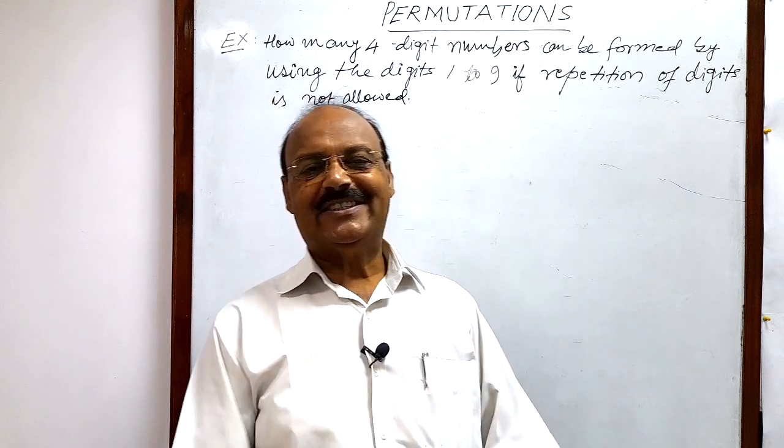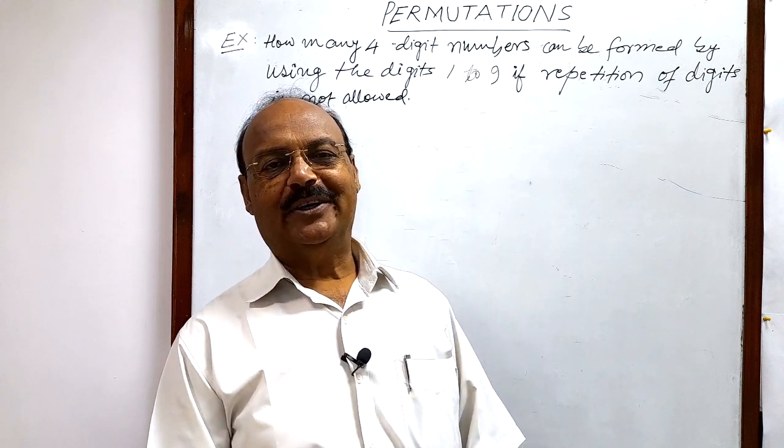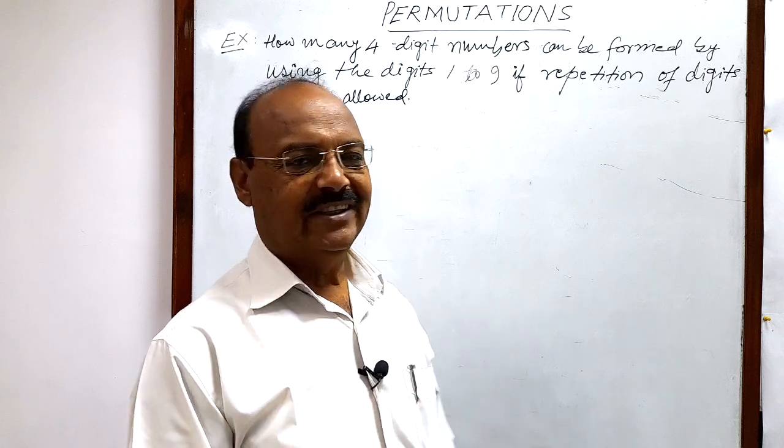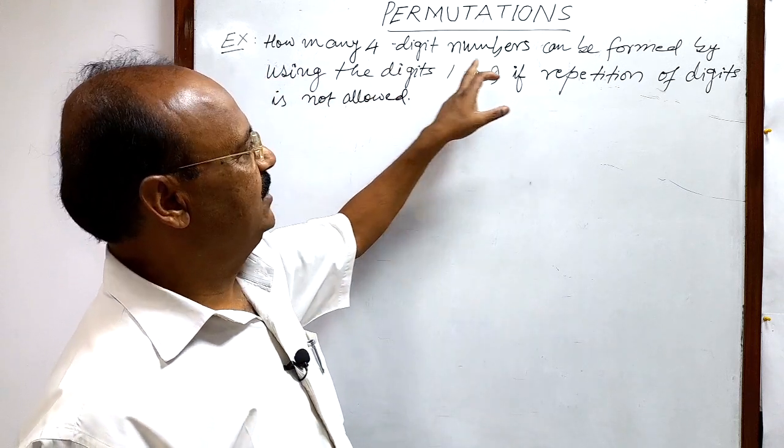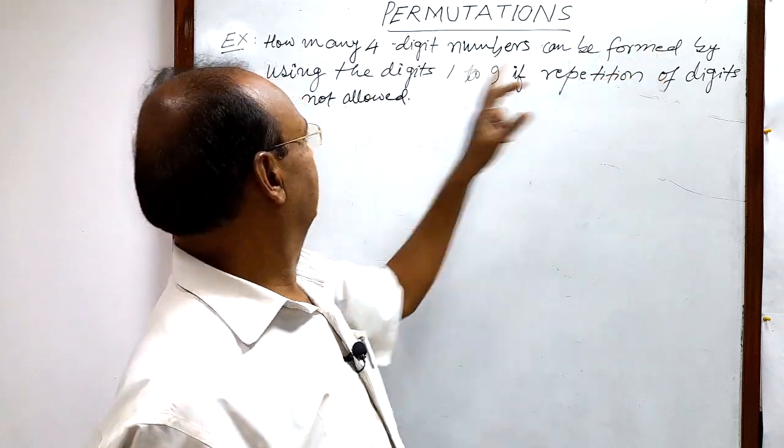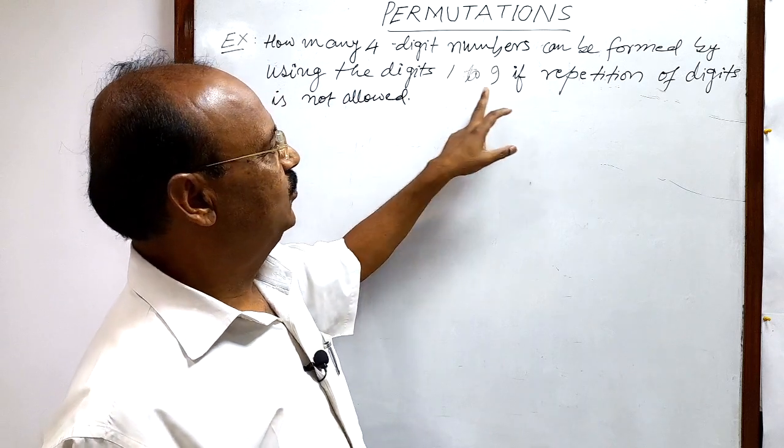Welcome students. Today we are going to discuss a very interesting question from the topic of permutations. The question is: how many four-digit numbers can be formed by using the digits 1 to 9?